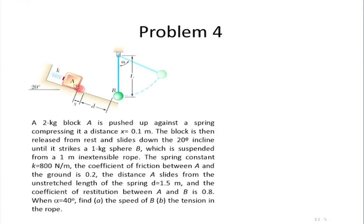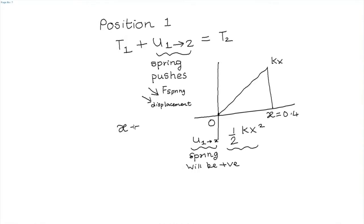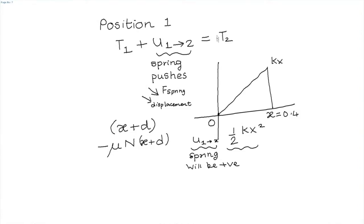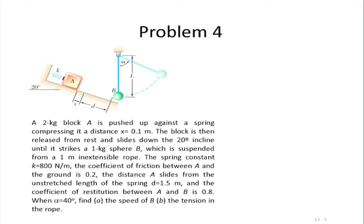The normal reaction is found by equilibrium of the particle in the normal direction — because of the constraints, the particle cannot have acceleration in the normal direction. Using this, we find the final kinetic energy and from that we know the momentum of the particle when it hits the pendulum.